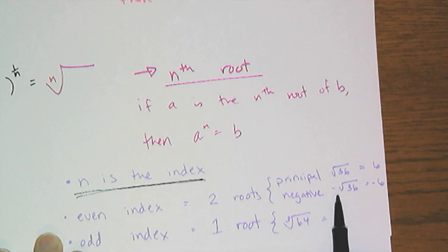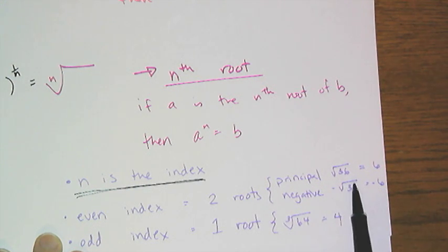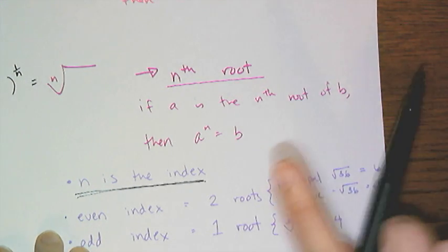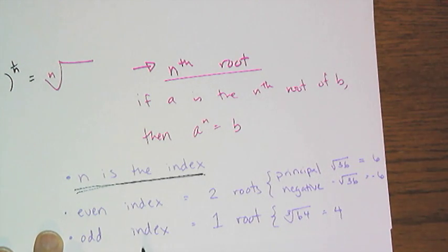Like negative square root of 36, which is negative 6. Notice how I wrote the negative root. The negative sign is outside of the radical. You don't stick it inside the radical, that's an entirely different thing. And if you have an odd index, that means you have exactly one root. So there's only one cube root of 64, and that is 4.